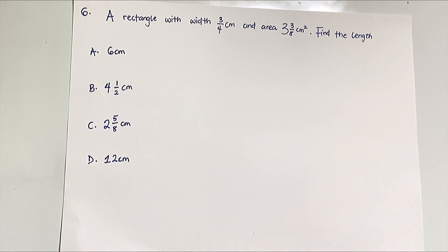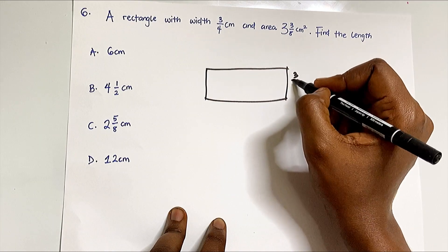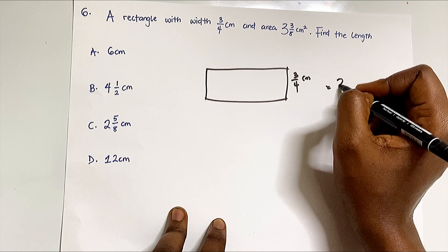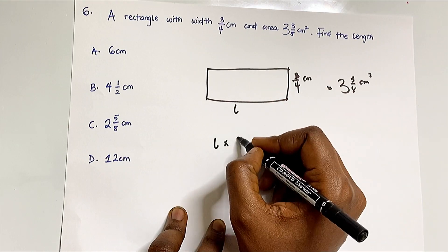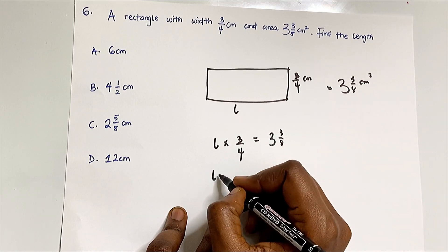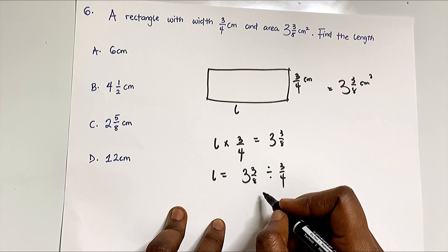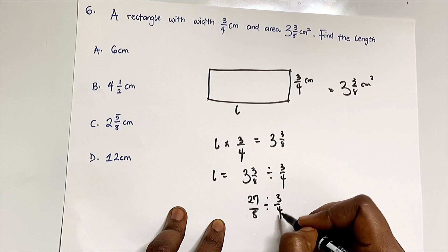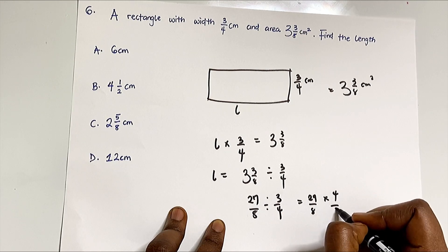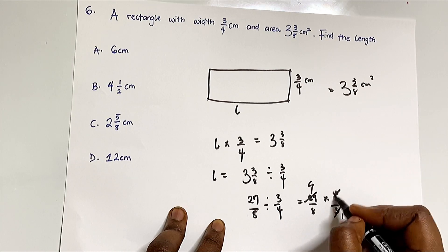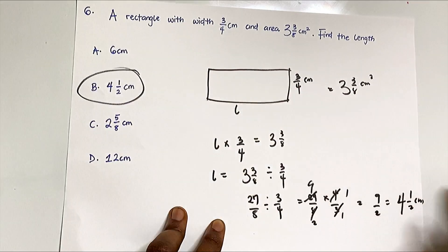The last question: a rectangle has a width of ¾ cm and an area of 3⅜ cm² — find the length. Using area = length × breadth: length × ¾ = 3⅜. So length = 3⅜ ÷ ¾ = (27/8) ÷ (3/4) = (27/8) × (4/3). Cancelling — 4 and 8 give 2, 27 and 3 give 9 — we get 9/2 = 4½ cm, which is option B.